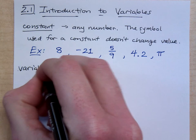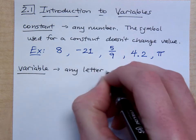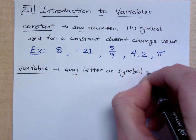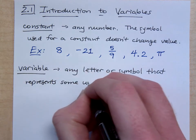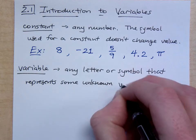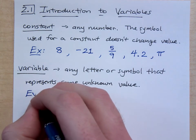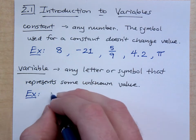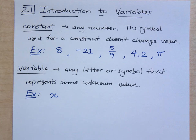Now I want to talk about what it means to be a variable. A variable is any letter or symbol that represents some unknown value. A lot of people's favorite example of a variable is just x. Here's the thing about x: if I see this symbol today or later in this class, you don't know what x represents. x could be representing 5, x could equal 100. You don't know.